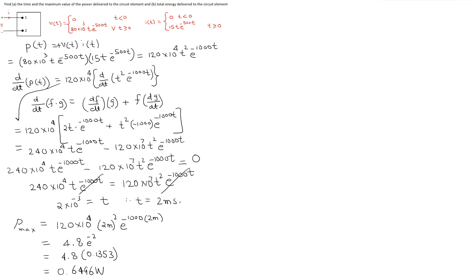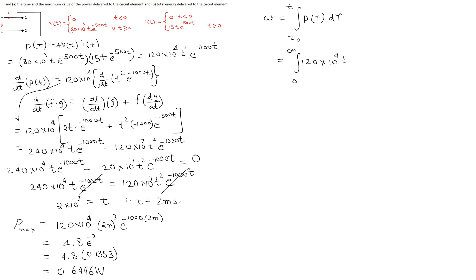Next we move on to the second part, which is to find the total energy delivered to the circuit. The energy delivered is related to the instantaneous power by integrating the instantaneous power from initial time to some final time t. In order to find the total energy, we set the upper limit to infinity and lower limit to 0, since voltage and current are 0 for t less than or equal to 0. We substitute the value of the instantaneous power and change the variable of integration to tau: tau squared e raised to the power minus 1000 tau d-tau.